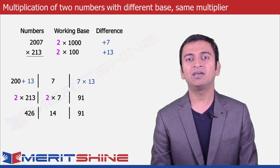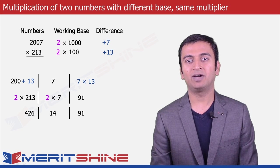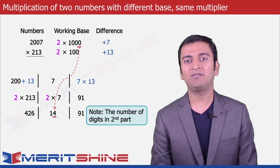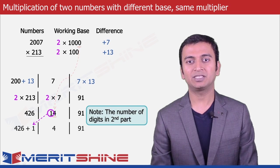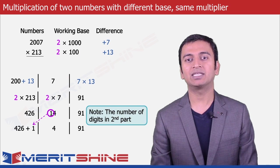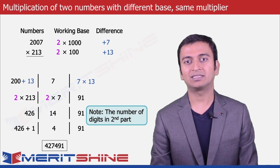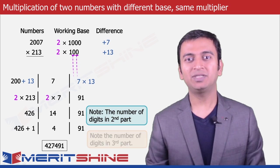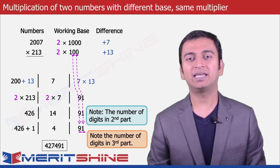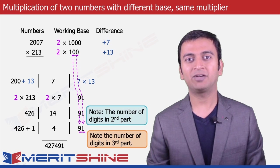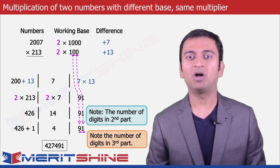Now since the number of digits that could be accommodated in the second part was only 1, the 1 from 14 will have to be carried to the first part, giving us 426 plus 1, which is 427. We can now club these parts and get our final answer as 427,491. Please note that the third part will always have the number of digits equal to the number of zeros in the base of the smaller number.